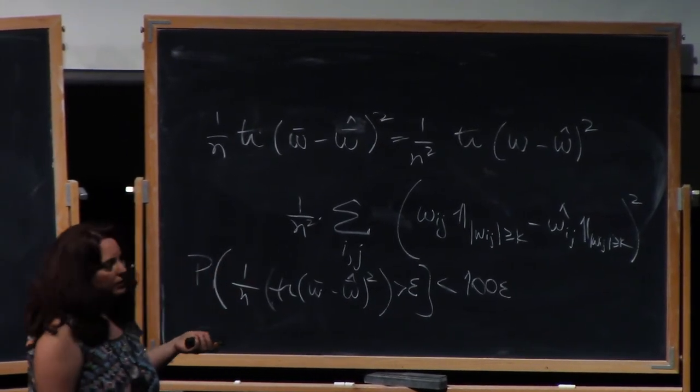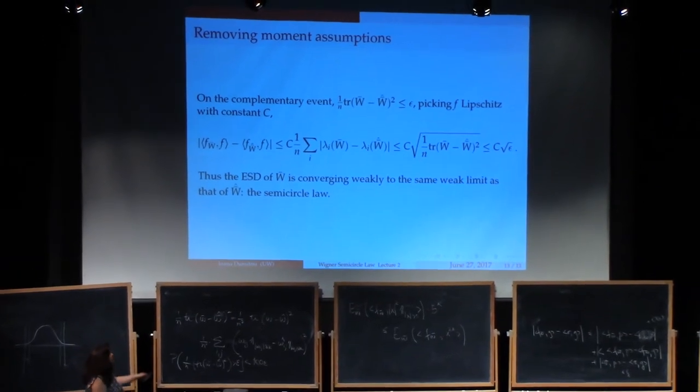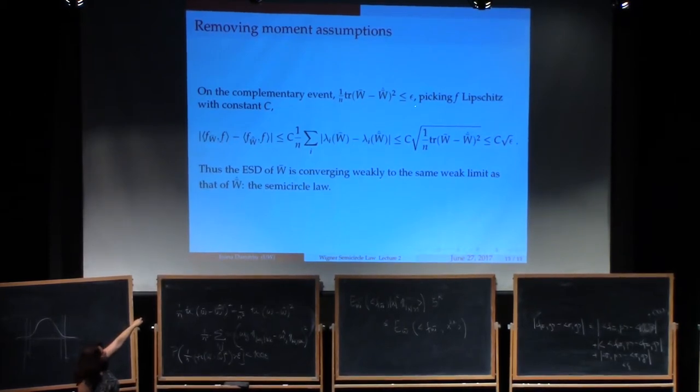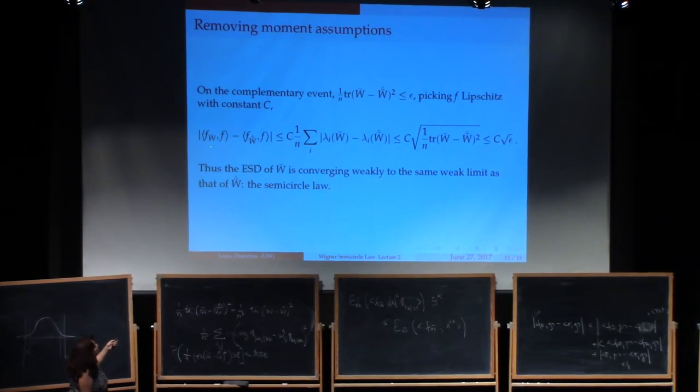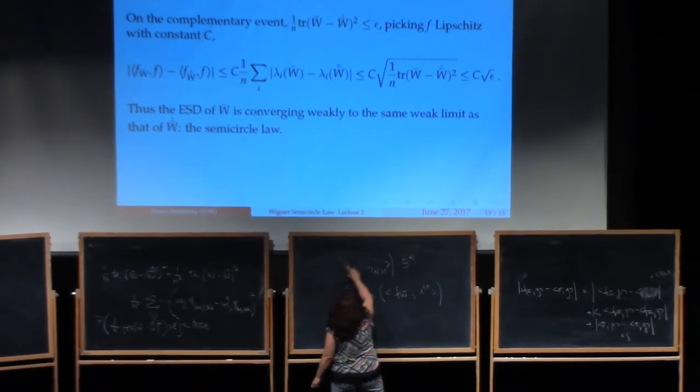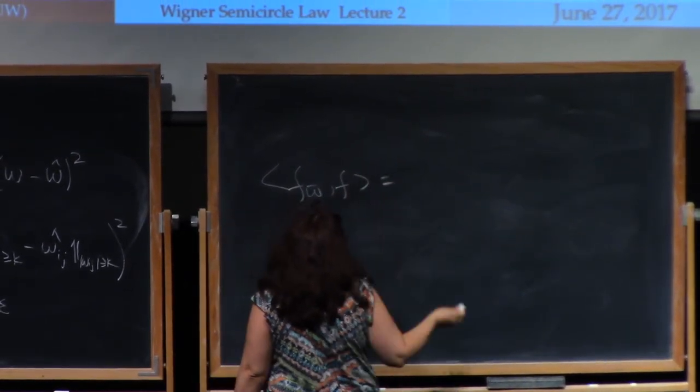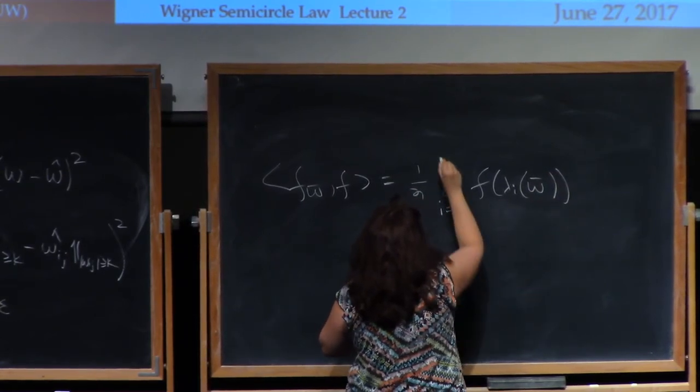So now let's look at the complement, the complementary event. Suppose that we're not in this event, we're on the complementary event. So one over n trace of W minus W bar hat squared is less than or equal to epsilon. If that happens, let's take a look and see if I pick a Lipschitz function with constant C, what the difference will be between the inner product of F_W bar with F and of F sub W bar hat with F. What's the difference between those two inner products?